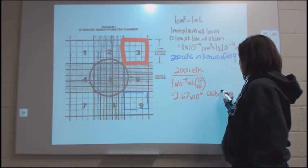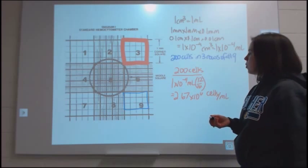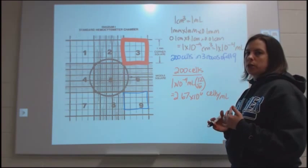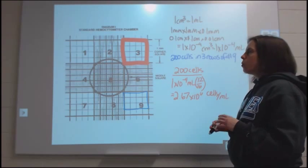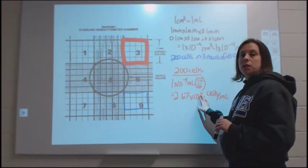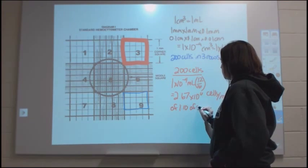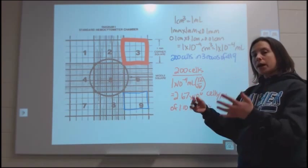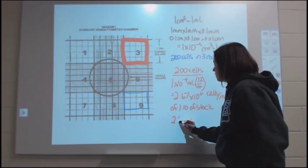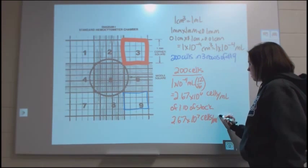Once you have this calculation, you may need to back calculate from a dilution. Say you have a really concentrated suspension of cells, so you've already diluted it 1 to 10 before applying it to your hemocytometer. This would be the concentration of that 1 to 10 dilution of stock. To back calculate that, you'll need to multiply your count by 10, so this would end up being 2.67 times 10 to the 7 cells per milliliter in the original.